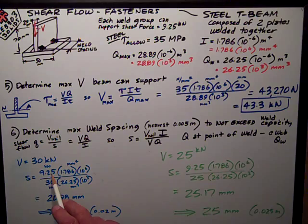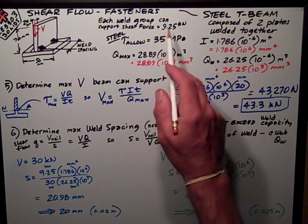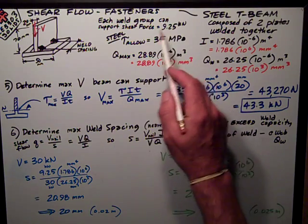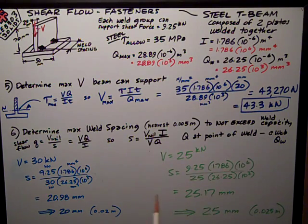I get 9.25 kilonewtons per weld group, and we made it clear that the weld group was a pair of welds, two welds on each side of the web.